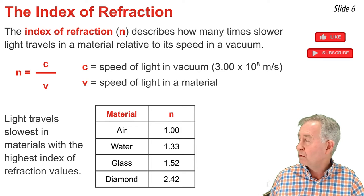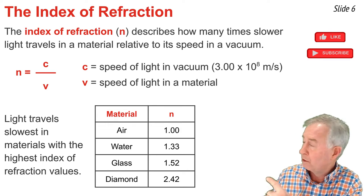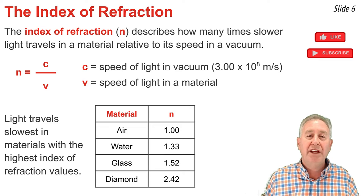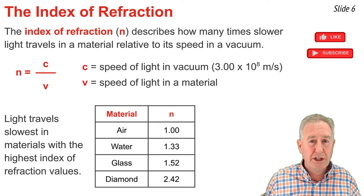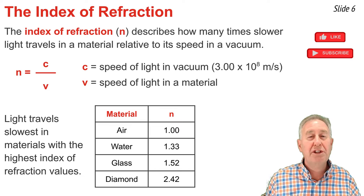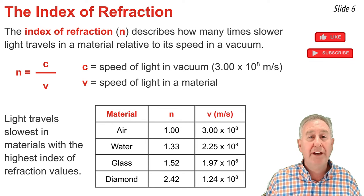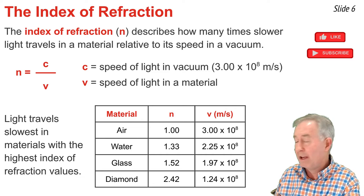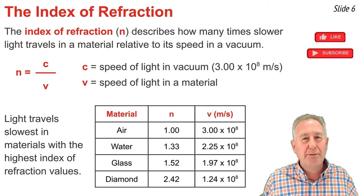We can take these values of n and substitute into the equation to solve for v, the speed of light in each of these materials. The equation is rearranged to v = c/n. Then we substitute in the value of n, and we get these values for the speed of light in each material.